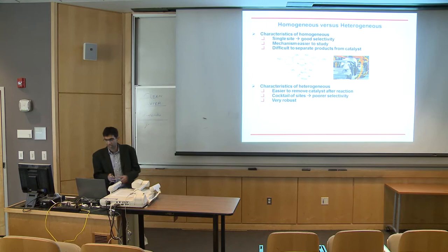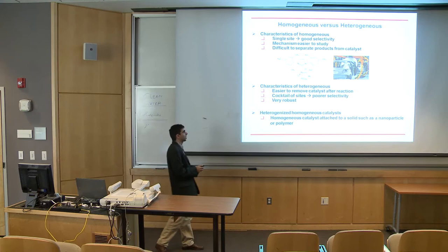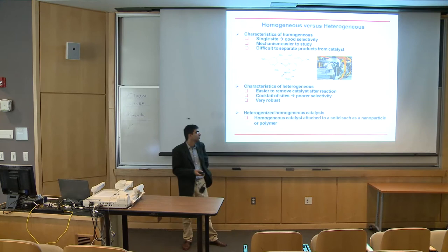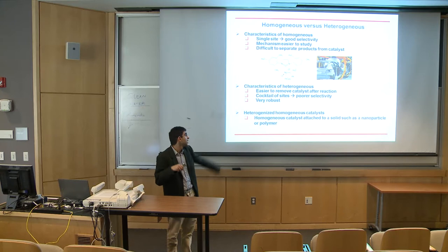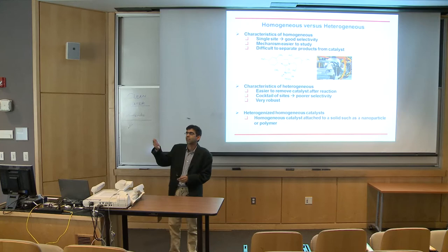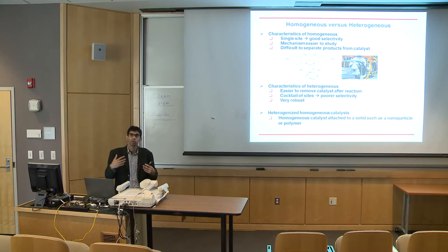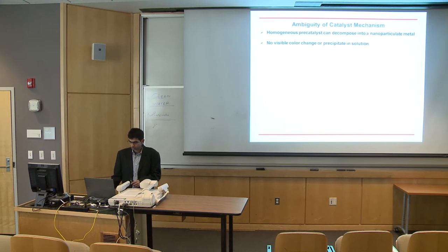For heterogeneous catalysts, it's very easy to remove the catalyst after the reaction. This is why about 80-90% of industrial processes use a heterogeneous catalyst — it comes down to the cost of separation. In many cases a heterogeneous catalyst has a cocktail of sites, which can lead to poor selectivity, but they tend to be significantly more robust, giving more turnovers. The other category — heterogenized homogeneous catalysts — attaches a homogeneous catalyst onto an inert solid support.